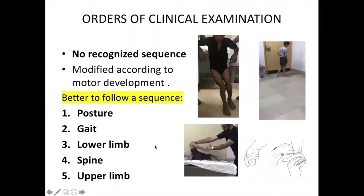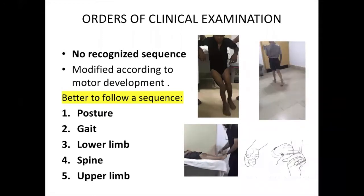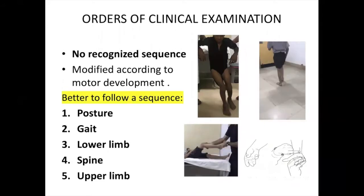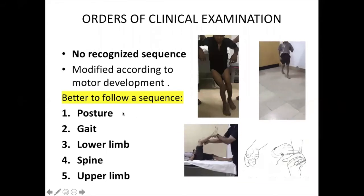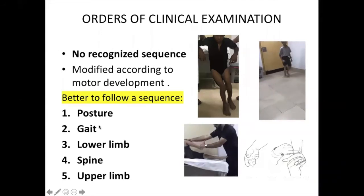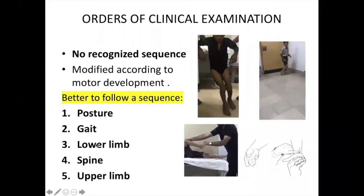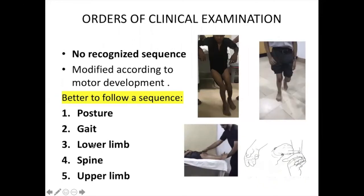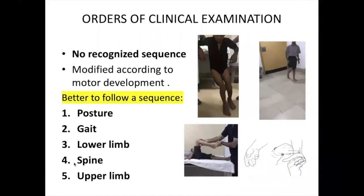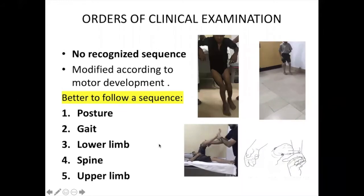Clinical examination will now cover phase three of this lecture. There is no recognized sequence for examination; it should be modified according to motor development. My sequence: when the patient enters I look at posture, then ask for gait — including Trendelenburg and Tutors tests. Then I ask them to lie on the couch, assess transfer to couch, then spine and upper limb examination.